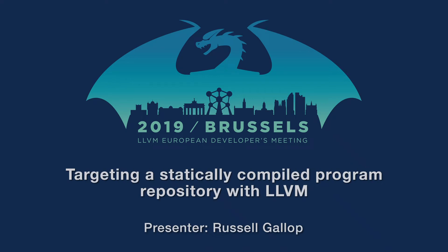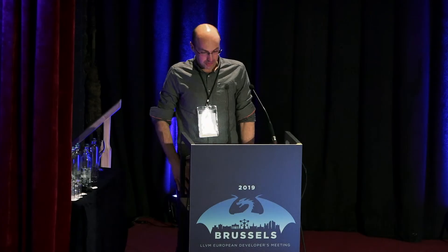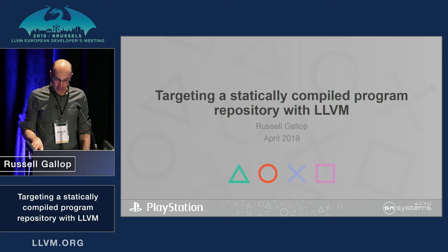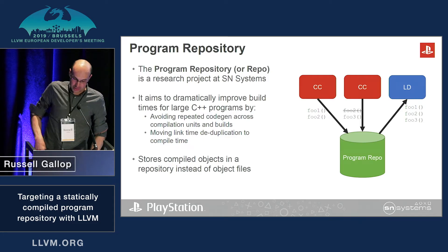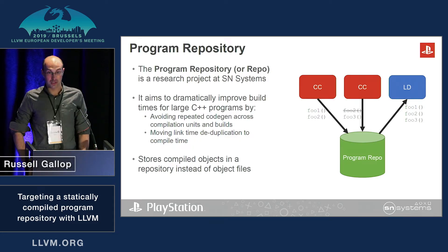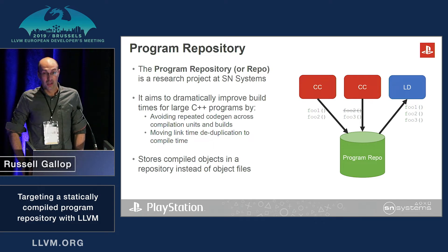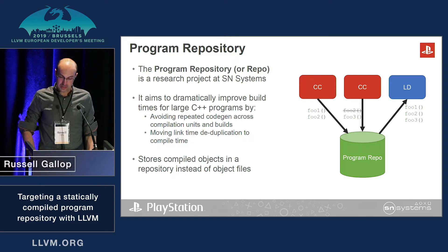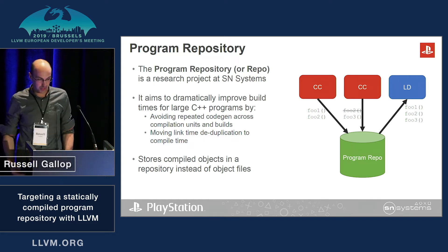And now for something completely different. My second talk is about a research project we have at Essence Systems. The Program Repo project is aiming to dramatically improve build times for large C++ programs by avoiding repeated code generation work across compile units and by doing deduplication at compile time rather than link time.